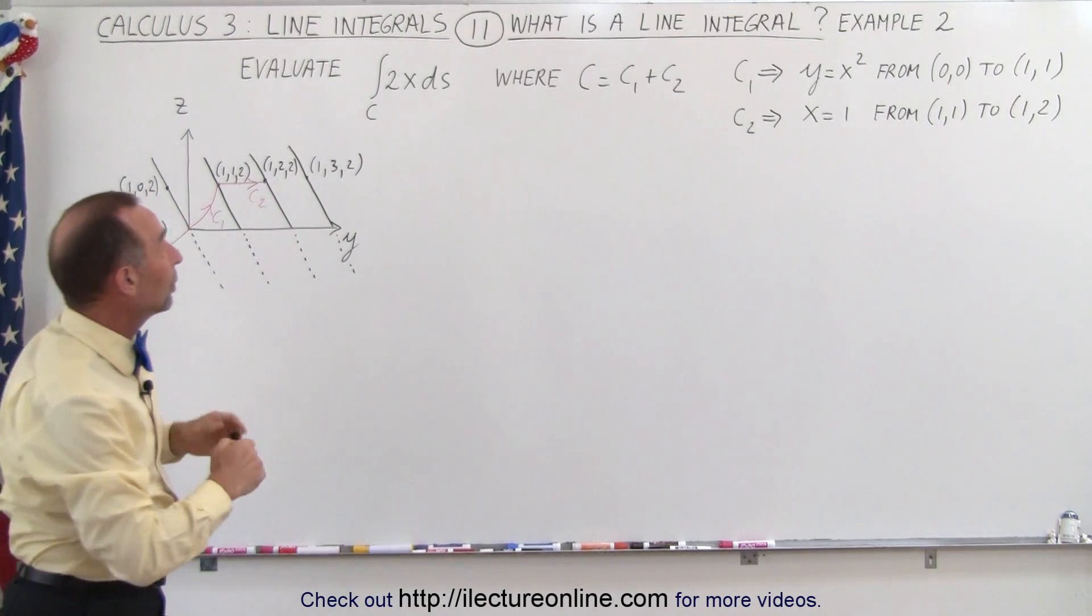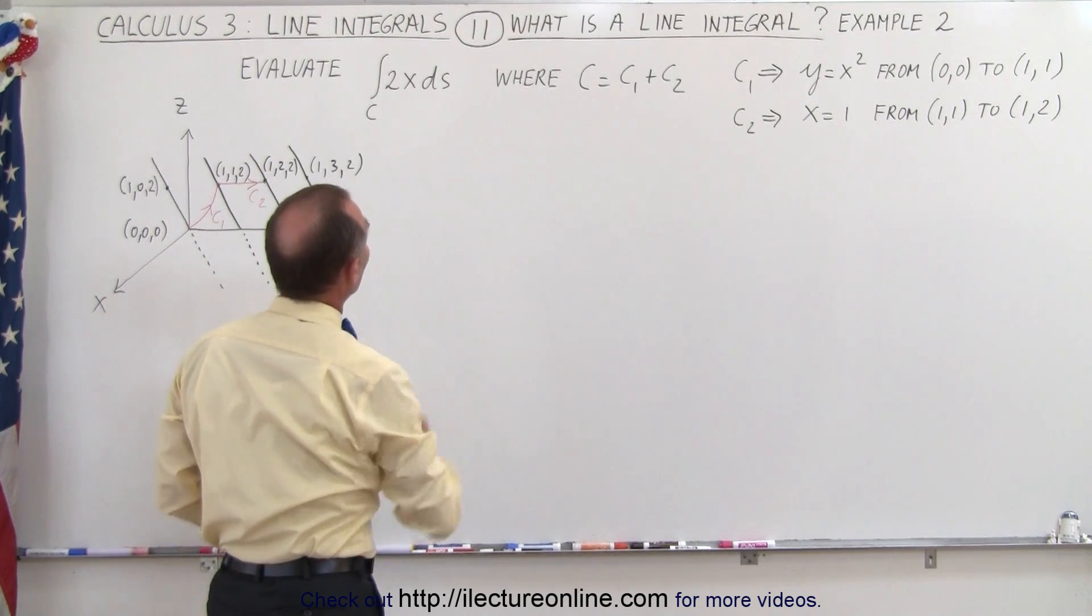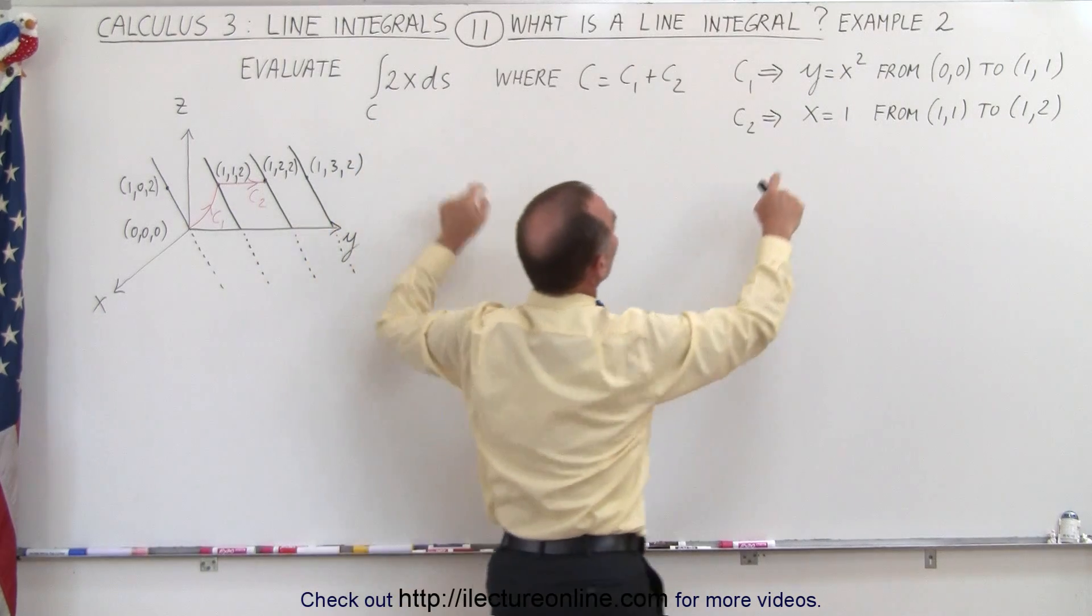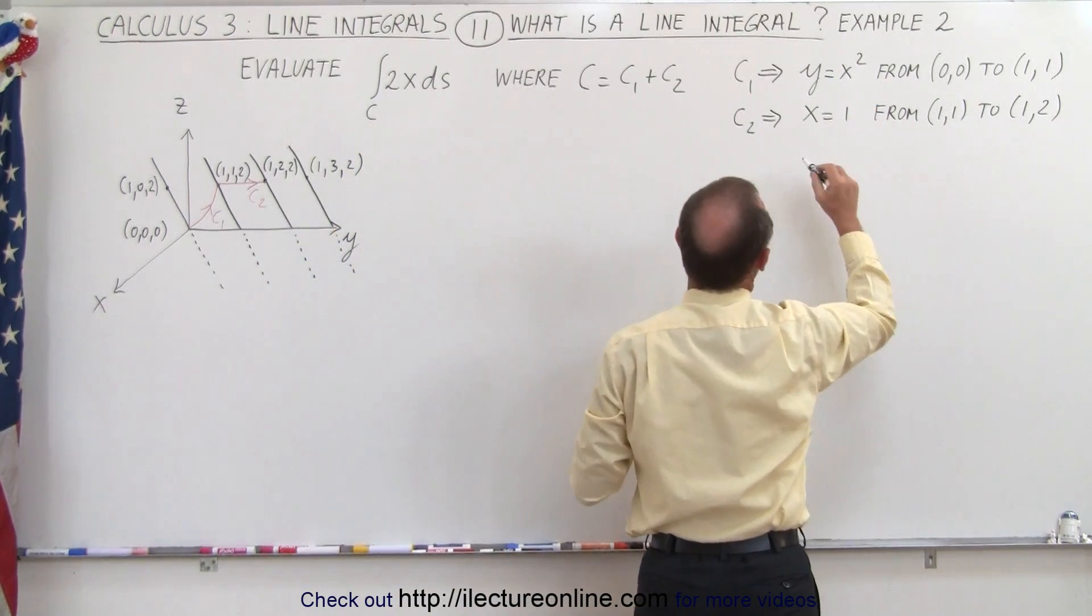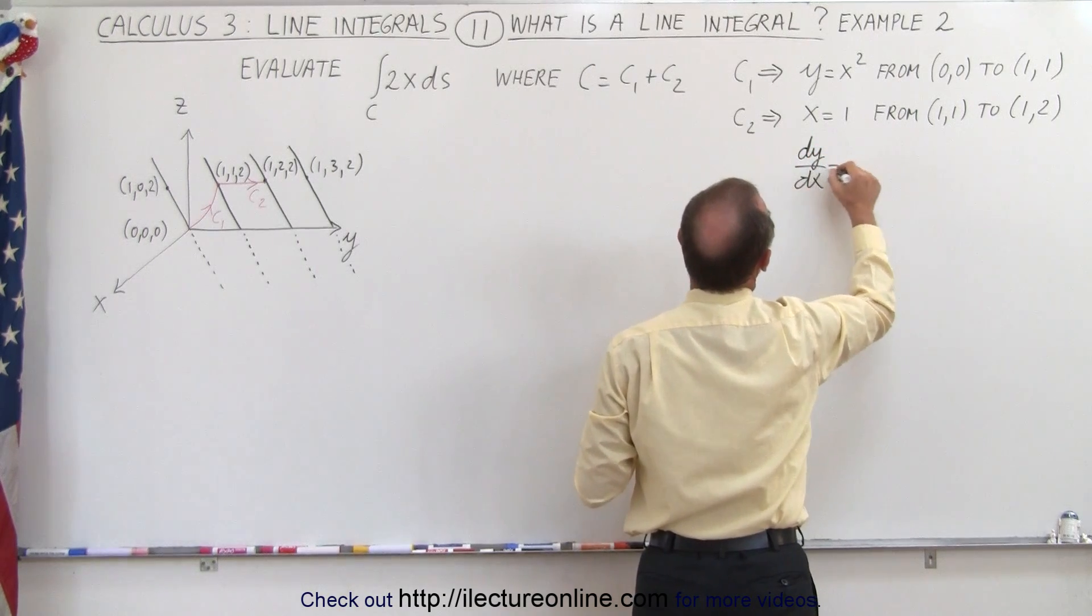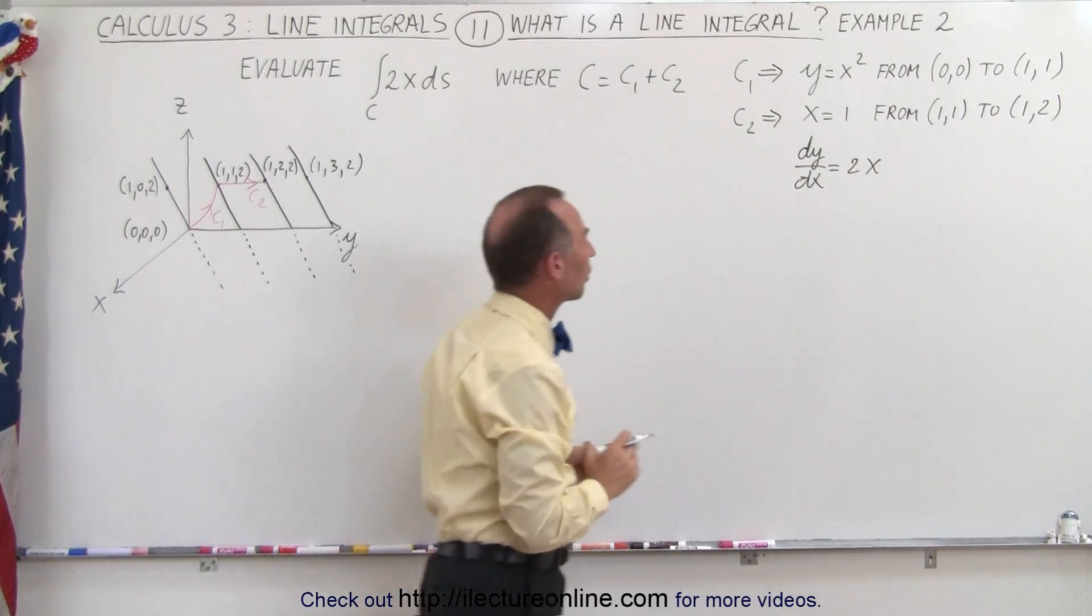Now, how do we do that? Well, we go ahead and look at it and say we can probably do that in the Cartesian coordinate system. We let x equal x, and y will be equal to x squared, which means that dy/dx is going to be equal to 2x, and dy is going to be 2x dx, if you want to look at it that way.